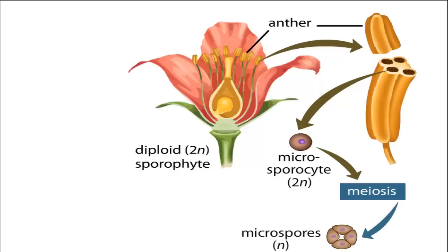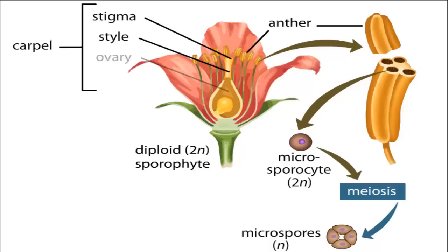Meanwhile, a similar process occurs within the flower's female parts, which consist of one or more carpals. In this example, the single carpal consists of a stigma, style, ovary, and ovule.